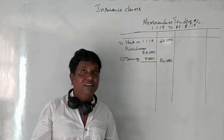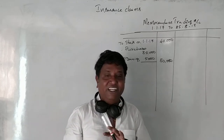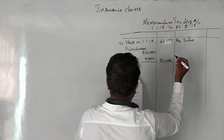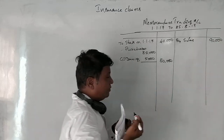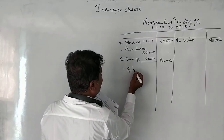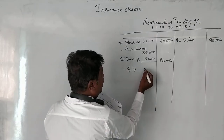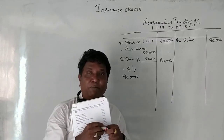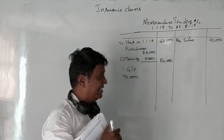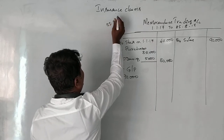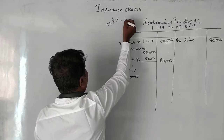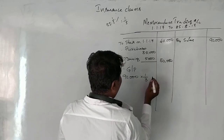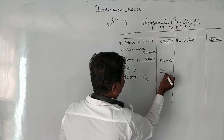On the credit side, sales are ₹90,000. Now for the gross profit — it is a balancing figure. The gross profit ratio is 33⅓% on sales. So: 1/3 of ₹90,000 = ₹30,000 gross profit.